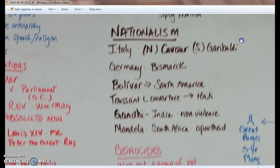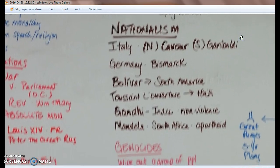Nationalism is huge during this time period because of those liberal ideas — liberalism meaning wanting democracy and civil rights. Nationalism is wanting people of the same language and culture to be together. In Italy: Cavour in the north, Garibaldi in the south with the red shirts using guerrilla warfare. Germany was united by Bismarck through Realpolitik. In South America: Bolívar, and Toussaint Louverture in Haiti. We also had Hidalgo in Mexico. Gandhi in India used nonviolence; Mandela in South Africa fought apartheid.